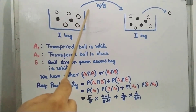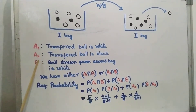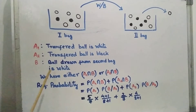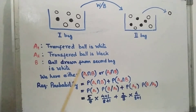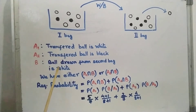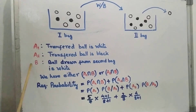Let us split the first activity into events A1 and A2. A1 means the transferred ball is white, and A2 means the transferred ball is black. The B event will be that the ball drawn from the second bag is white. Two cases arise: A1 and B, meaning the transferred ball is white and we get a white ball from bag two, or A2 and B, meaning the transferred ball is black and we get a white ball from bag two.